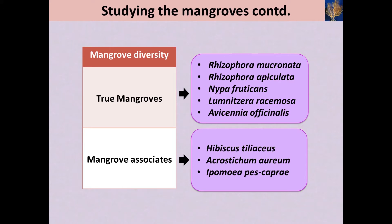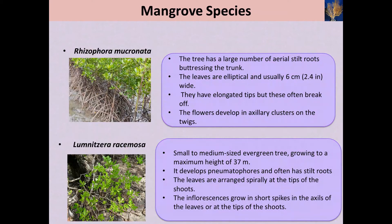Let's see what are the major characteristics of the mangrove species. When considering Rhizophora mucronata, it has a large number of aerial stilt roots buttressing the trunk. The leaves are elliptical and usually six centimeters in width, and they have elongated tips that often break off. The flowers develop in axillary clusters on the twigs.